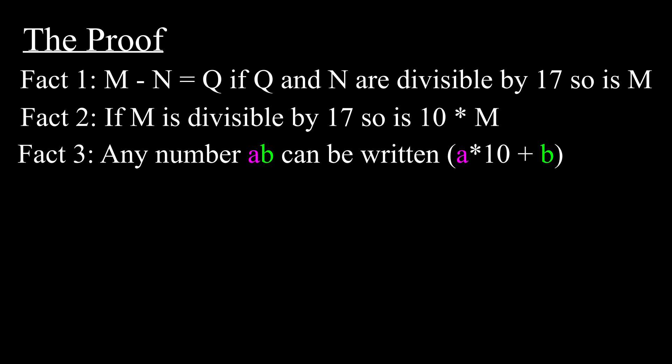Now we can bring it all together. Fact 3 tells us that any number can be rewritten as 10a plus b, so when we ask if a number is divisible by 17, we're really asking is 10a plus b divisible by 17.